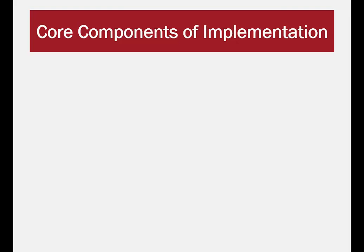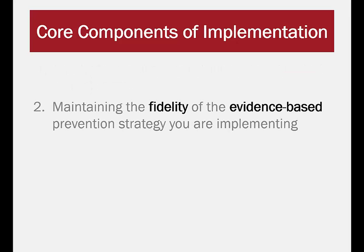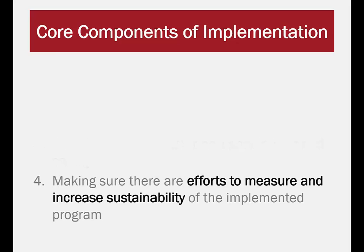There are four main components of implementation, all of which we will take a closer look at later in the module. The four main components are: 1. A well-planned implementation strategy using an action plan; 2. Maintaining the fidelity of the evidence-based prevention strategy you are implementing; 3. Adapting the intervention for new populations and settings; and 4. Making sure there is an effort to measure and increase sustainability of your implemented program.